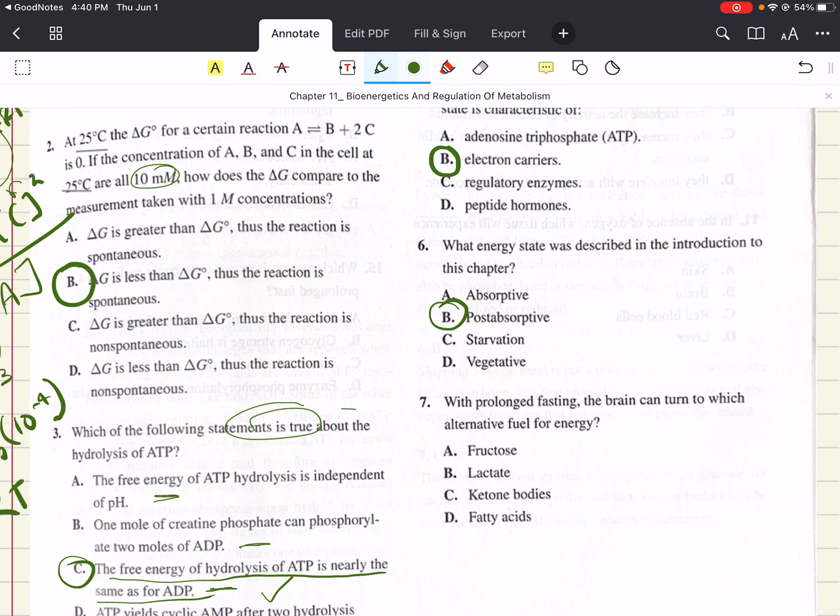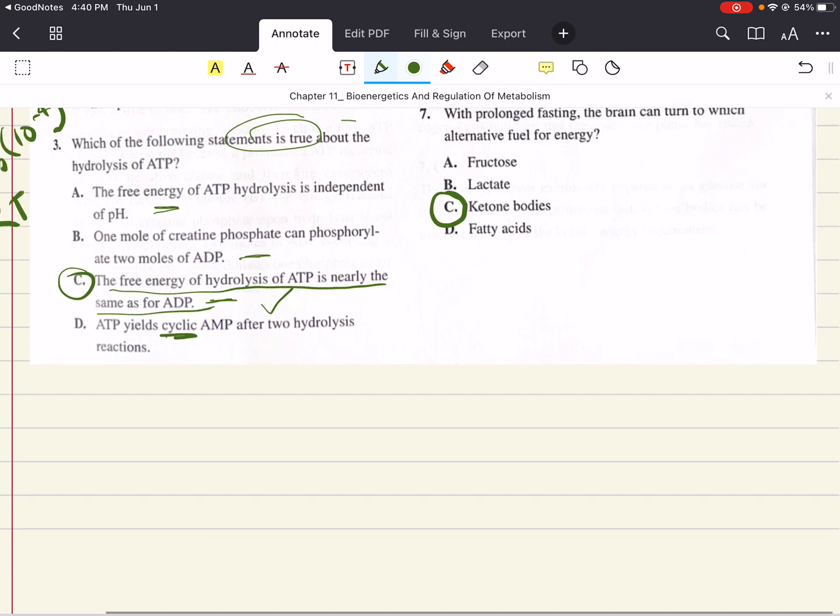Seven says with prolonged fasting, the brain can turn to which alternative fuel for energy? The answer here is ketone bodies. This was a very important theme in the last chapter, and we mentioned it several times in this chapter. So you can tell understanding that your brain uses ketone bodies as an alternative fuel for energy is a very important piece of information that you should know for the MCAT.